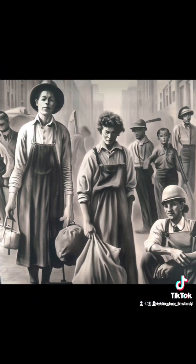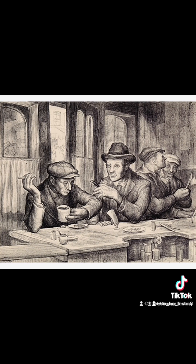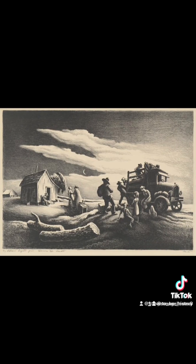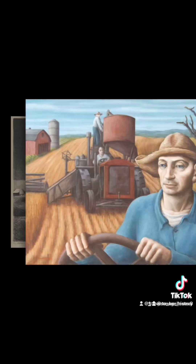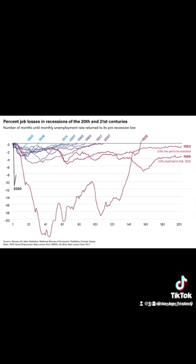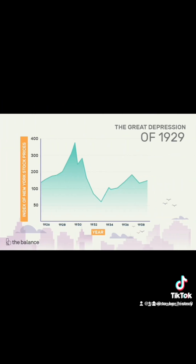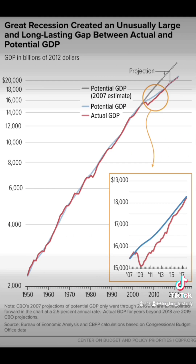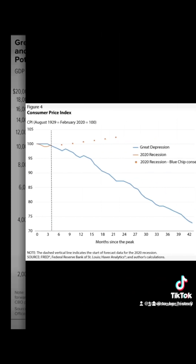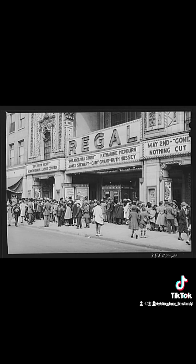The Great Depression had a profound impact on art and culture. During this period, artists grappled with the social and economic harshness of the time, and their works reflected the turmoil and despair of the era. Artists such as Grant Wood and Dorothea Lange captured the plight of farmers and laborers in their paintings and photographs, depicting the harsh realities of poverty and unemployment. The period also saw the rise of documentary photography as a powerful tool for social commentary and awareness.